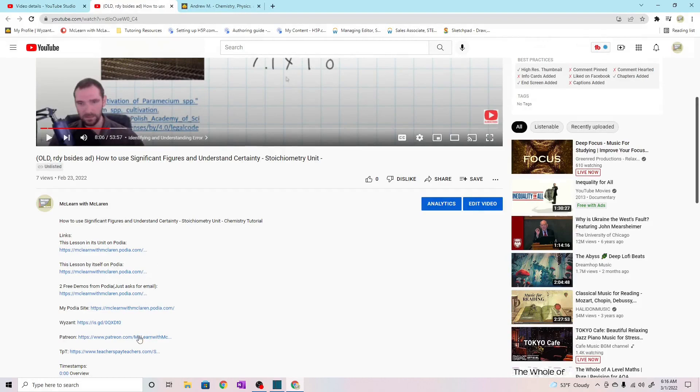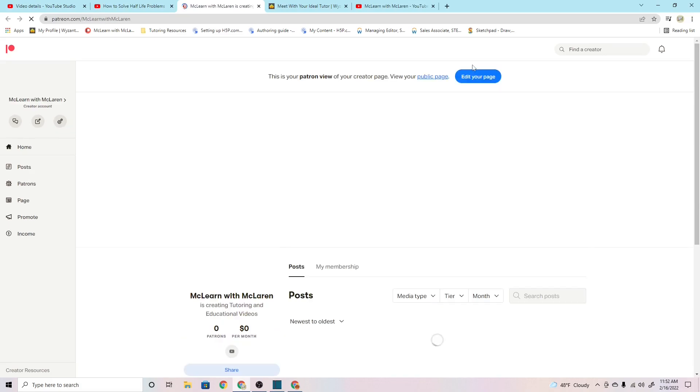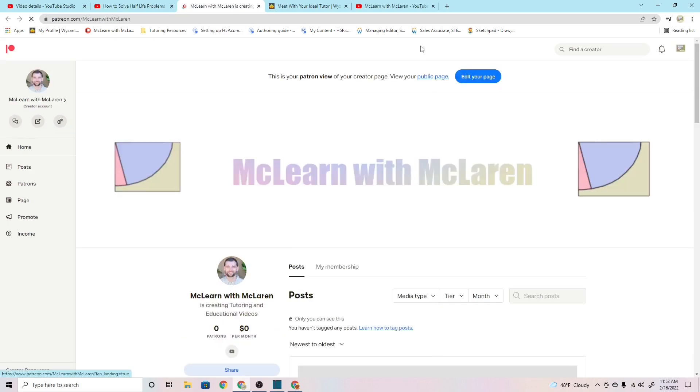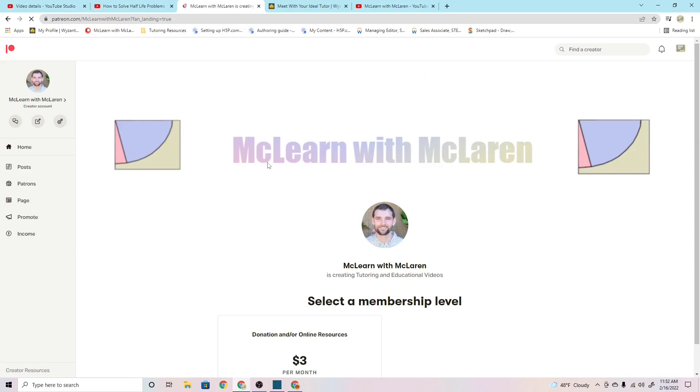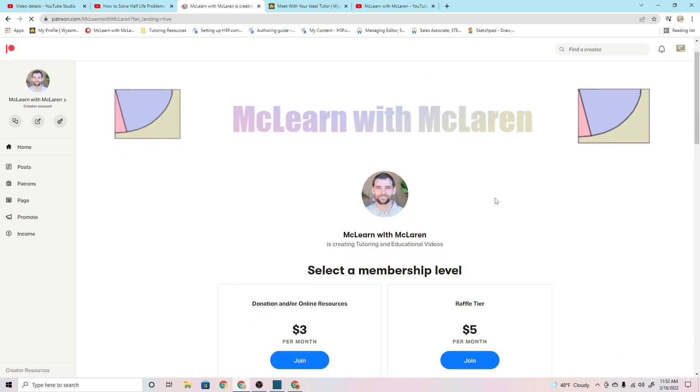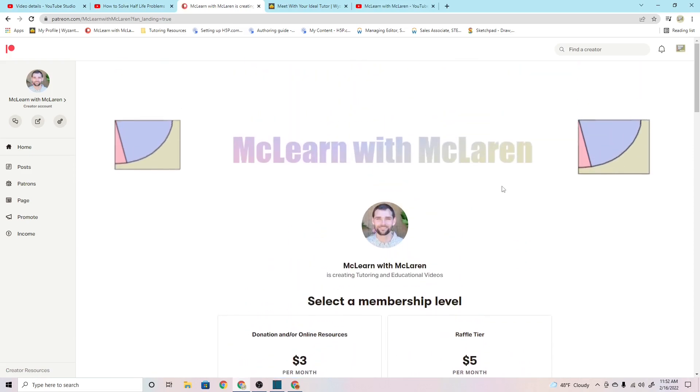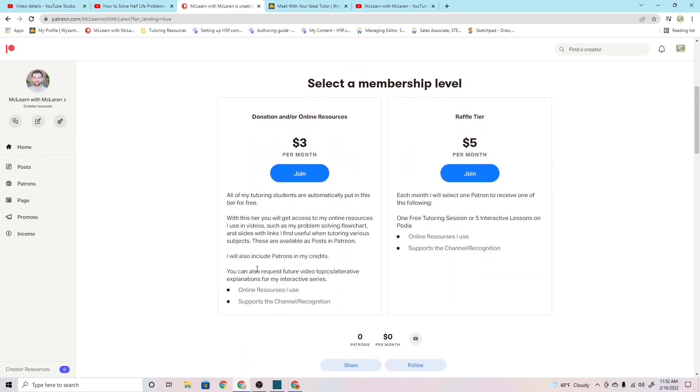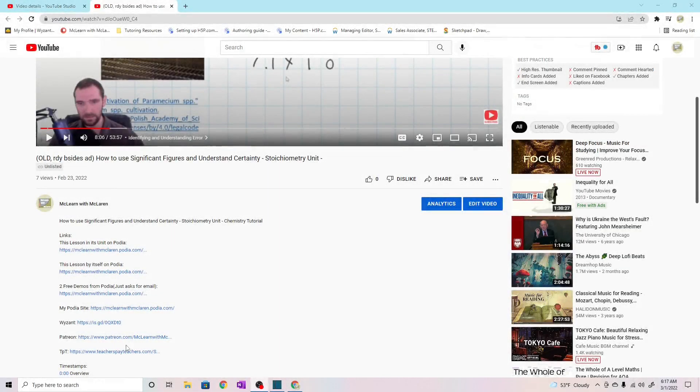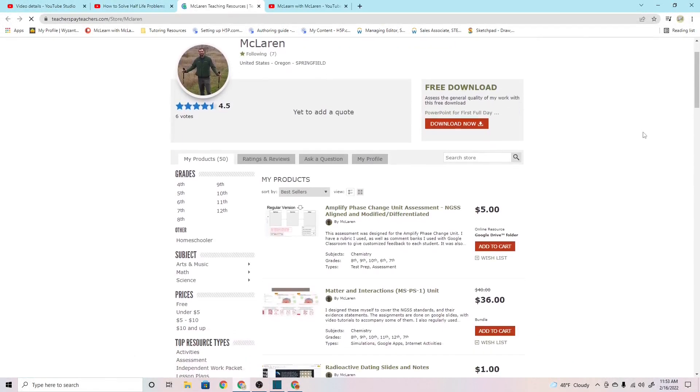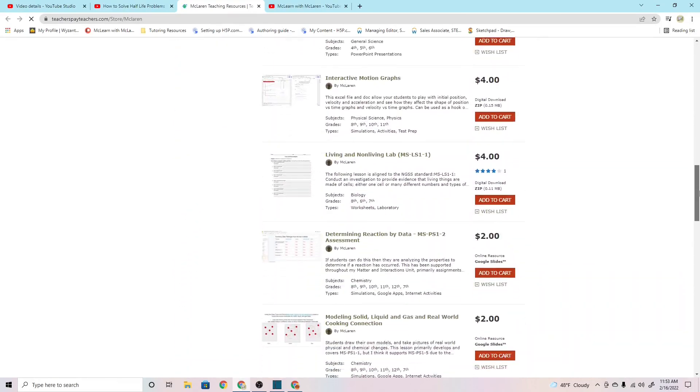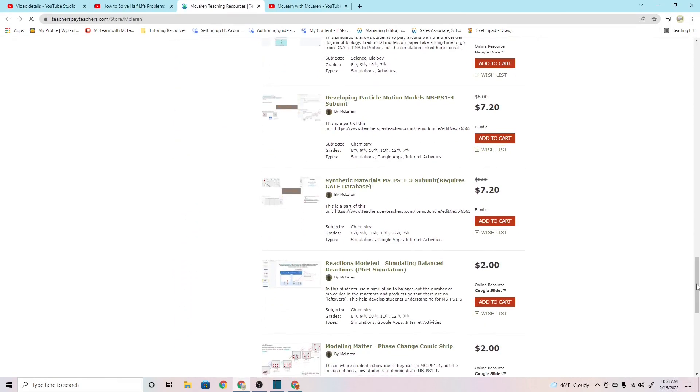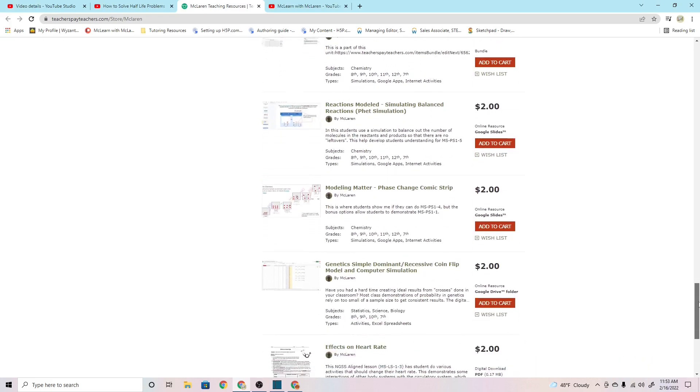Each video also has a link for my Patreon. You can join at the $3 level to get some resources I use for tutoring or to support the channel. I also have a $5 raffle level, which you could either get some free online tutoring or five interactive lessons for free. You choose which ones. I also have my Teachers Pay Teachers, which has some old lessons that I made from when I used to be a teacher. I may be adding to that.